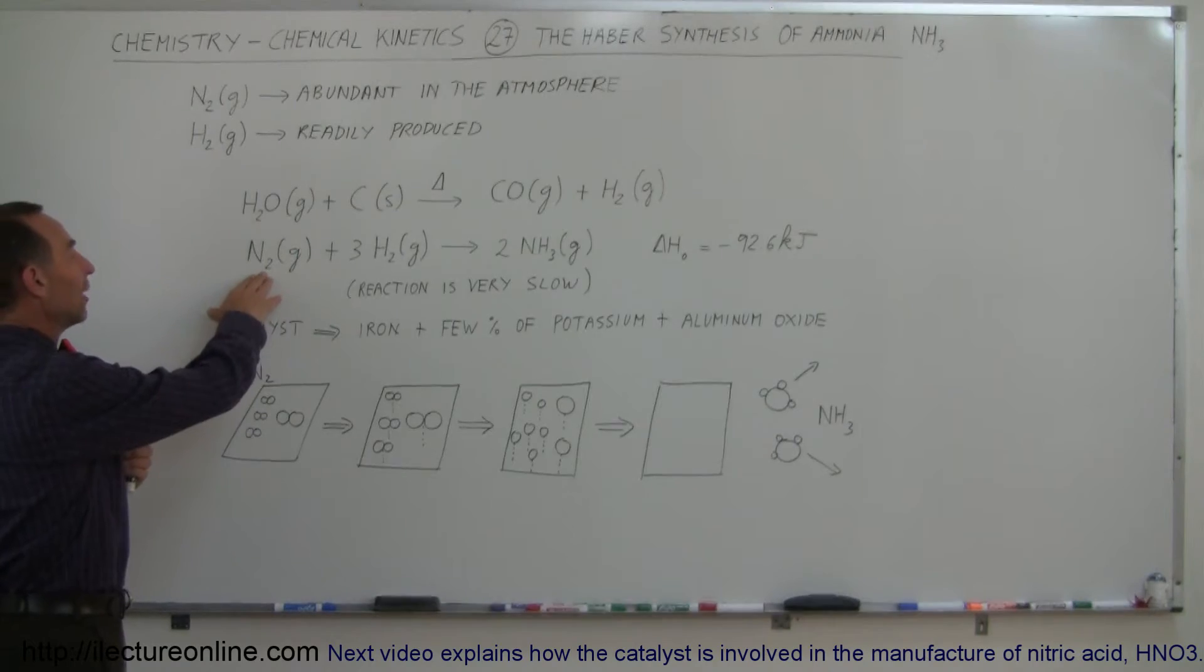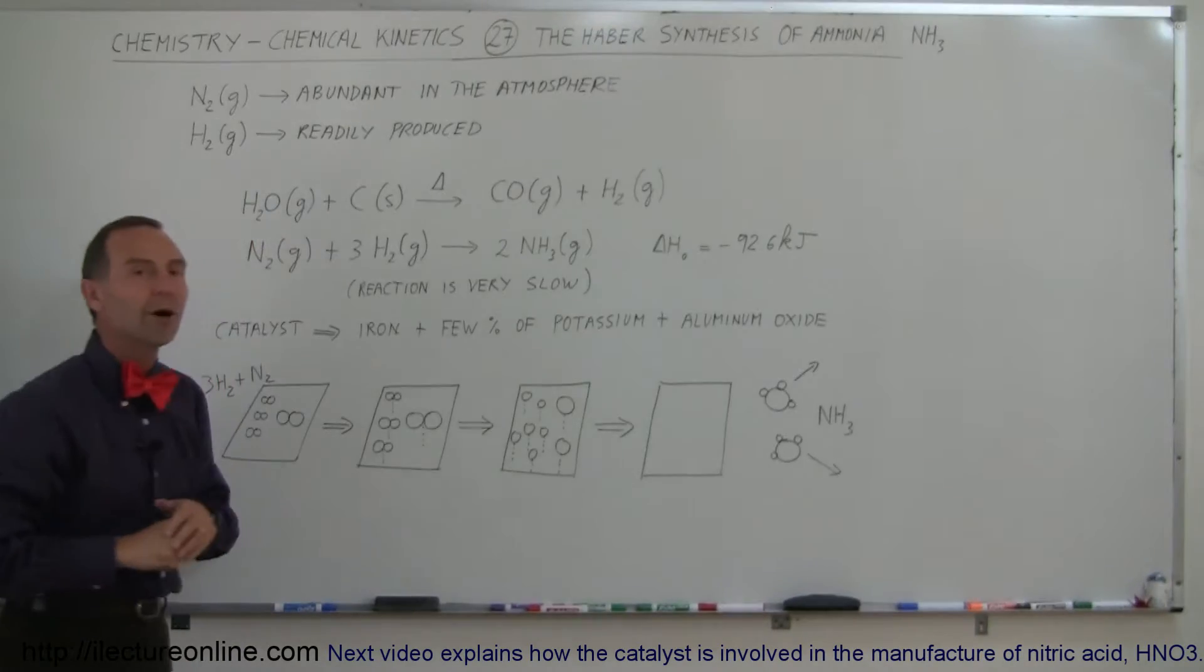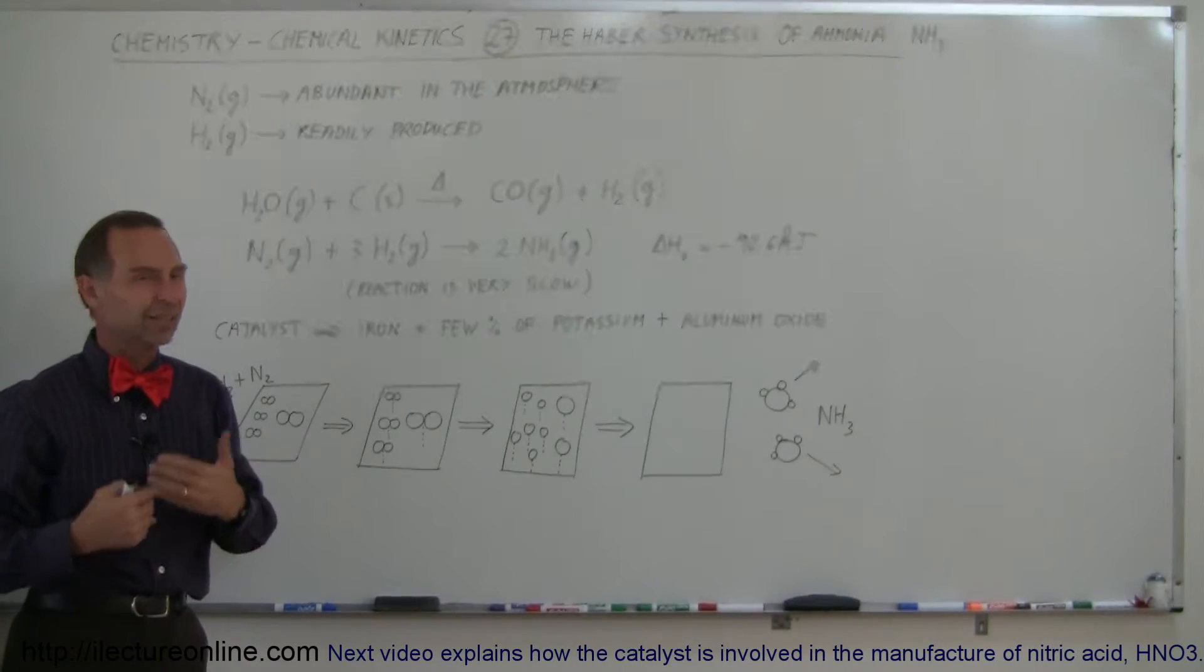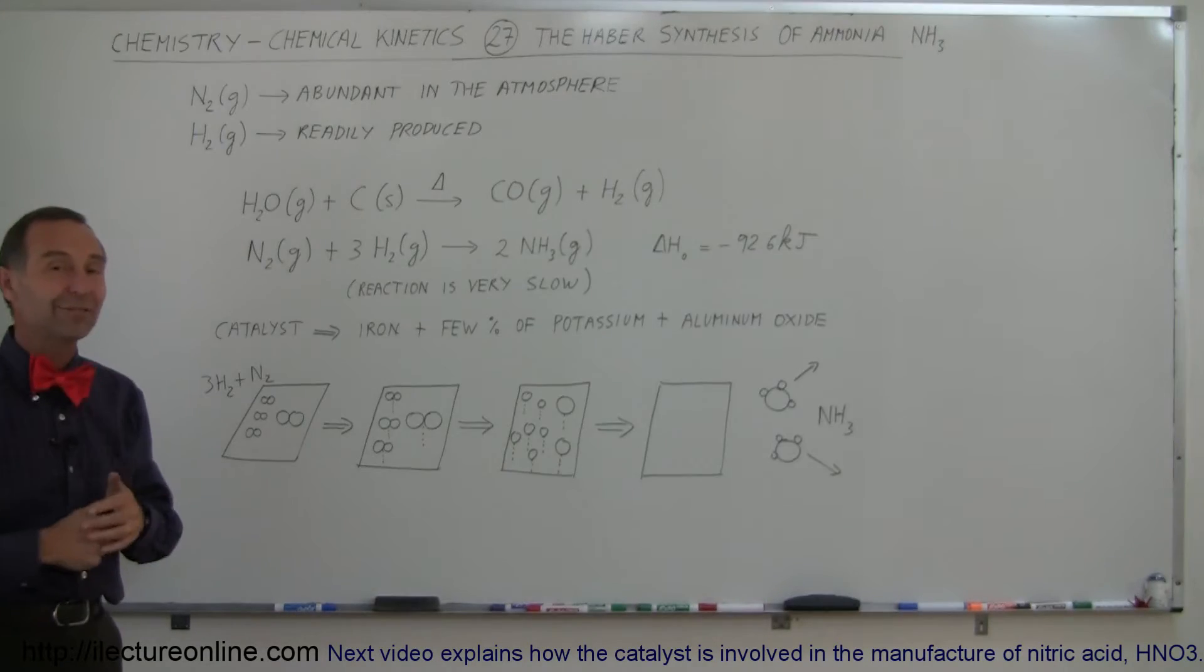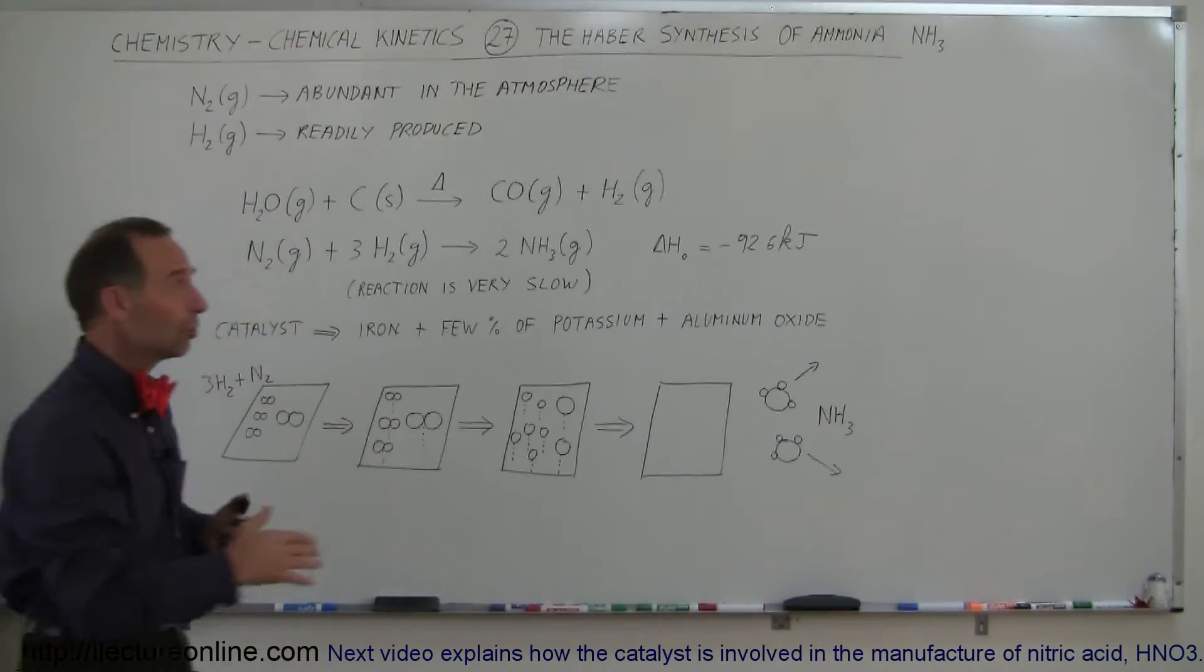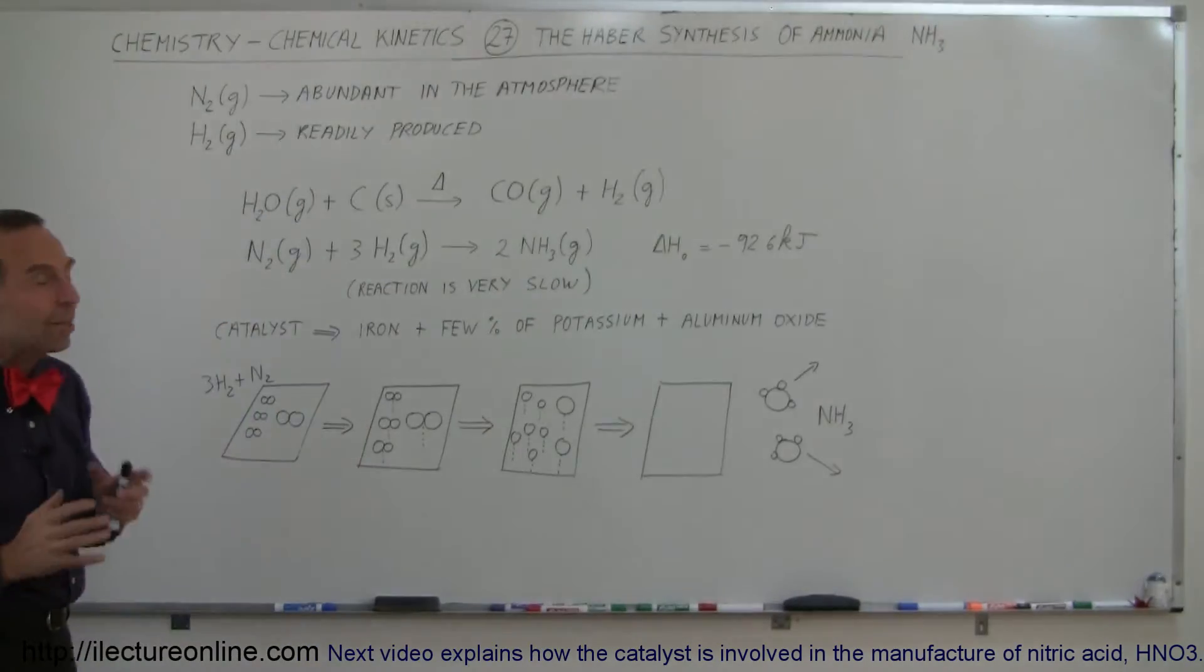The equation goes: one mole of nitrogen gas plus three moles of hydrogen gas produces two moles of ammonia gas. The problem again is this is a very slow reaction. It doesn't take place very quickly, and if we had to just let that go by itself, we'd have a really tough time producing enough ammonia. It's an exothermic reaction, it does produce a lot of heat, but that doesn't mean it's going to go fast.